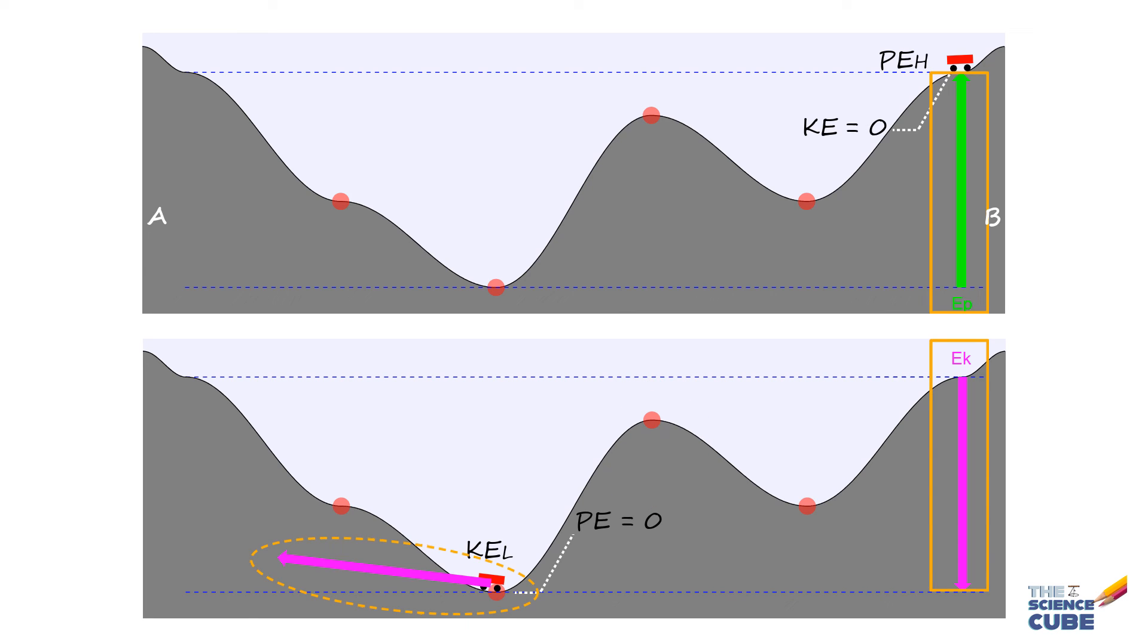So if we choose this lowest point as a reference point where the potential energy U2 is equal to zero and potential energy at the highest point is U1, let us say it is 20 joules relative to the reference point, then since the car momentarily stops at its highest point, the kinetic energy there is K1 is equal to zero. And putting these values into this equation gives us the kinetic energy K2 at the lowest point as 20 joules.